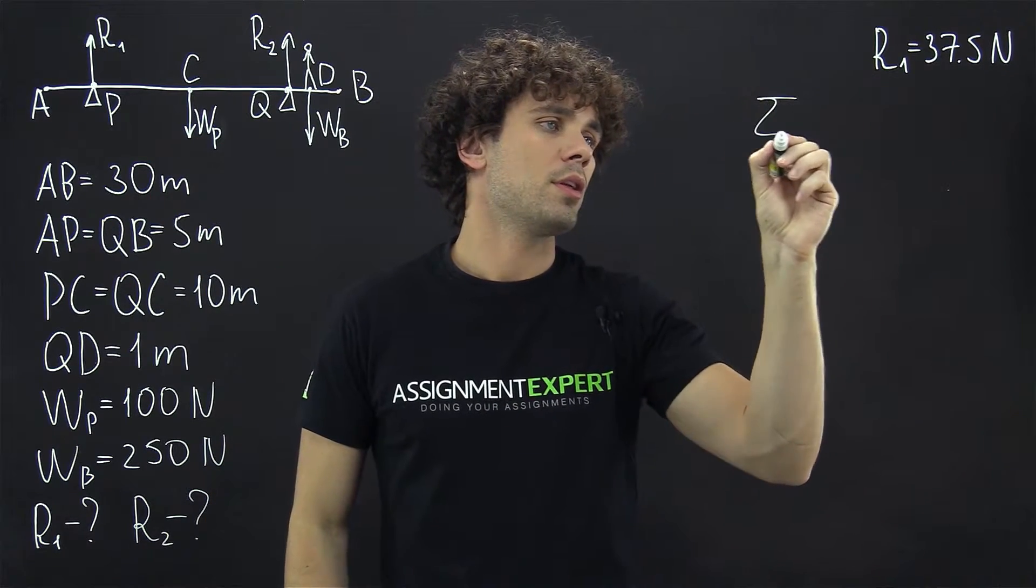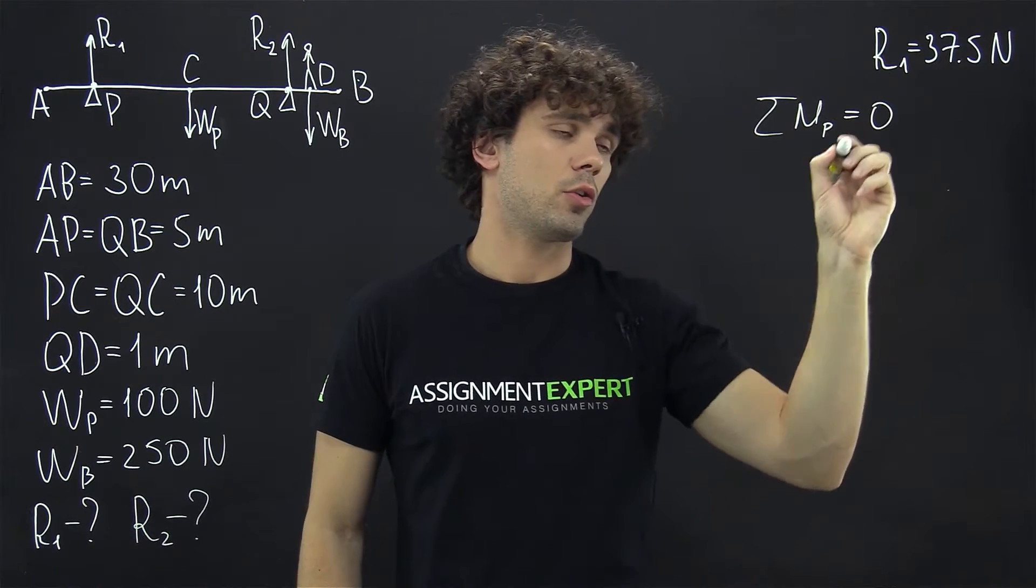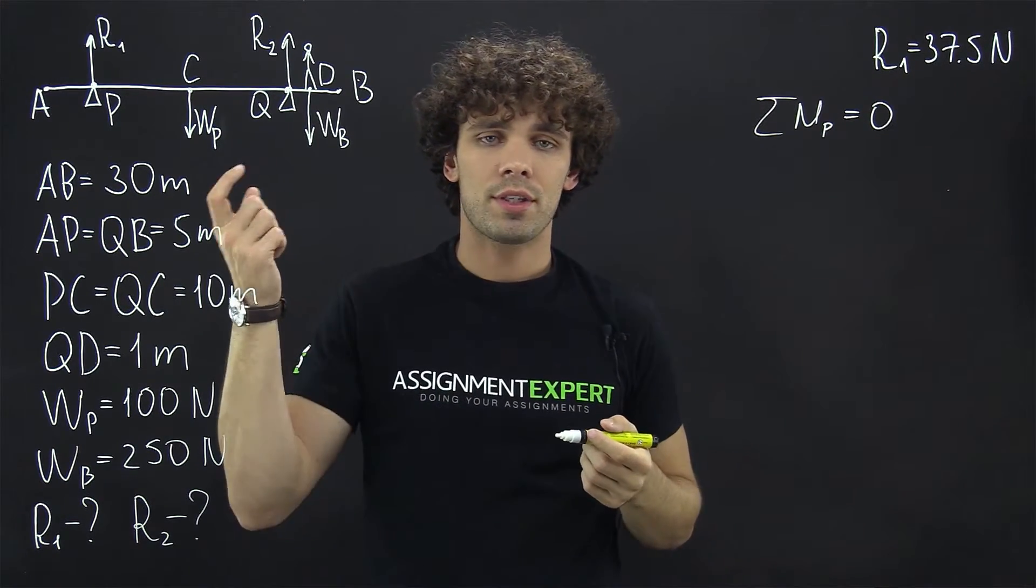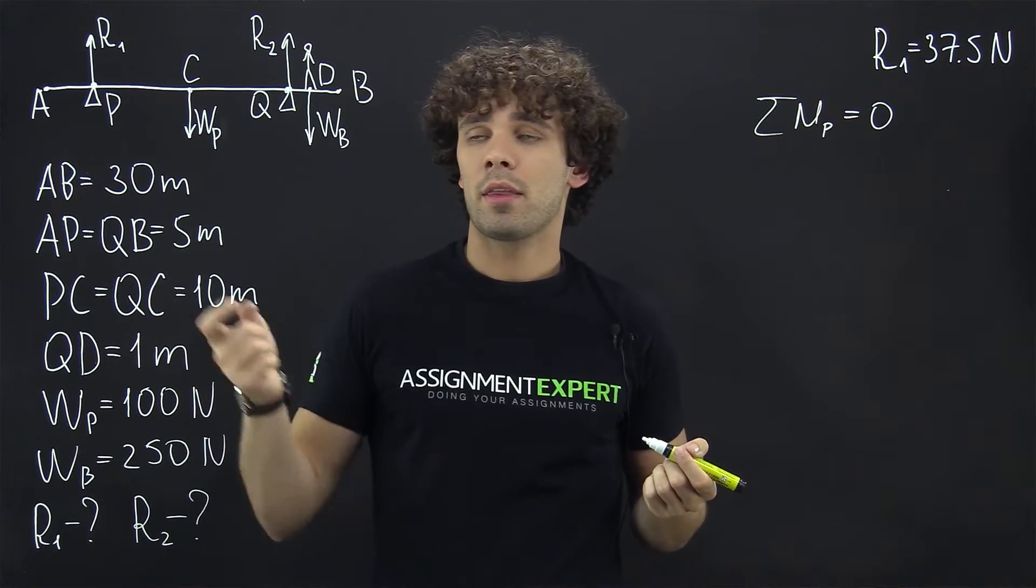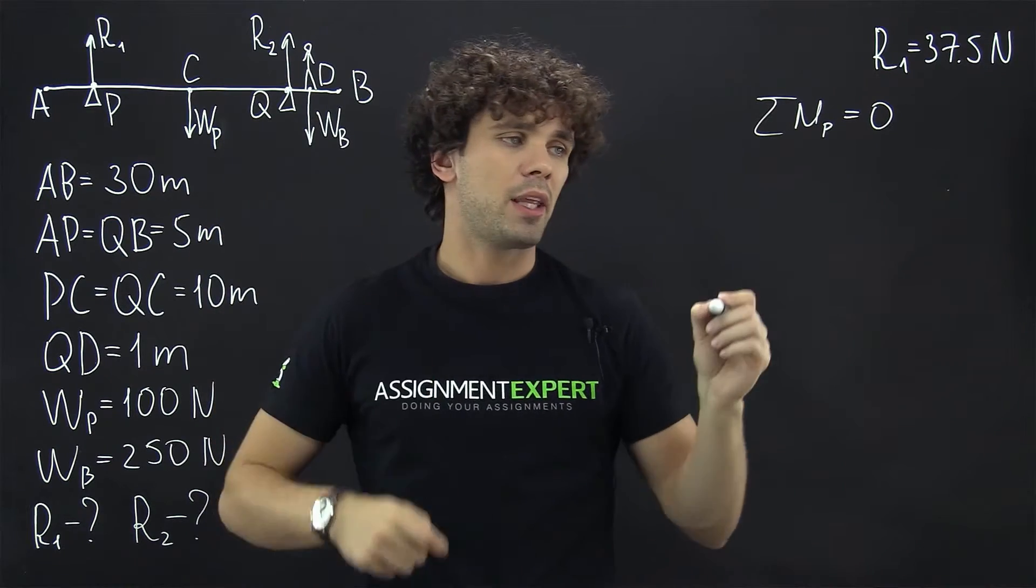So this sum for moments at point P equals 0, and this is because our setup is in equilibrium. Now let's take the clockwise direction as a positive direction. We have the weight of the plank, and the distance to it from point P is PC.